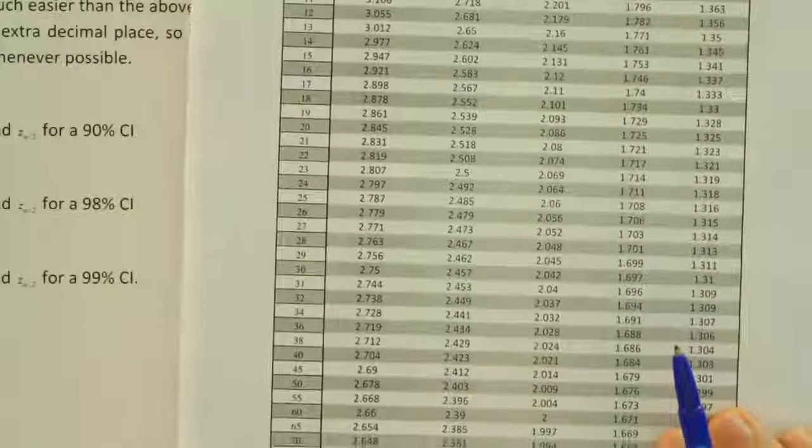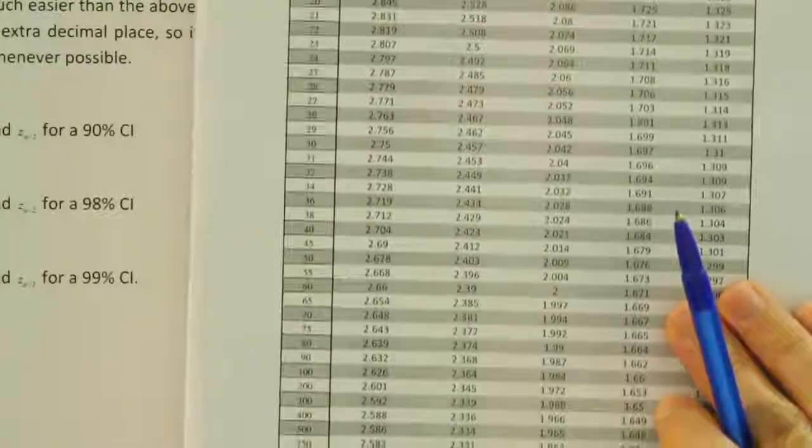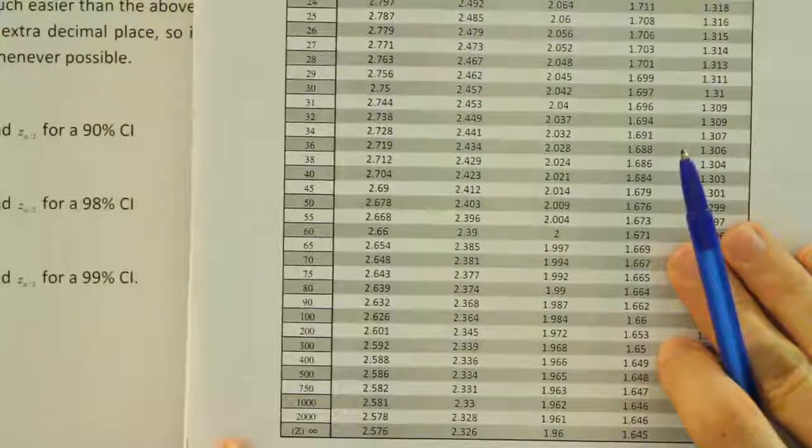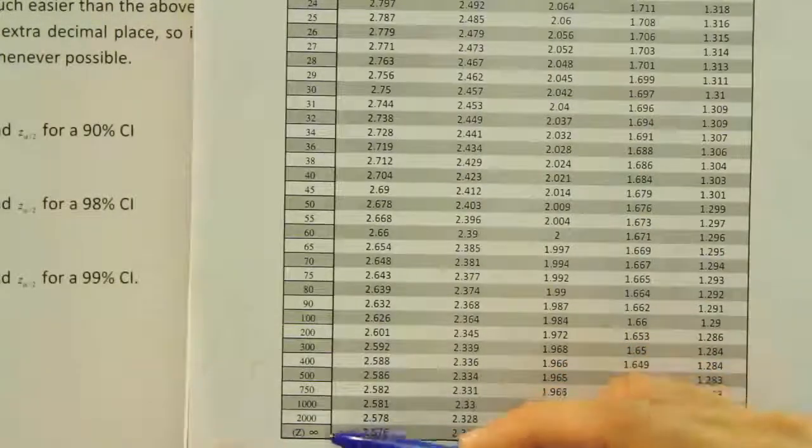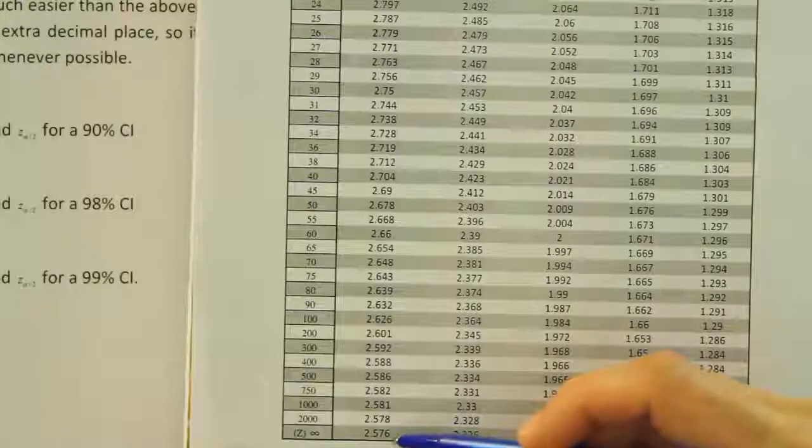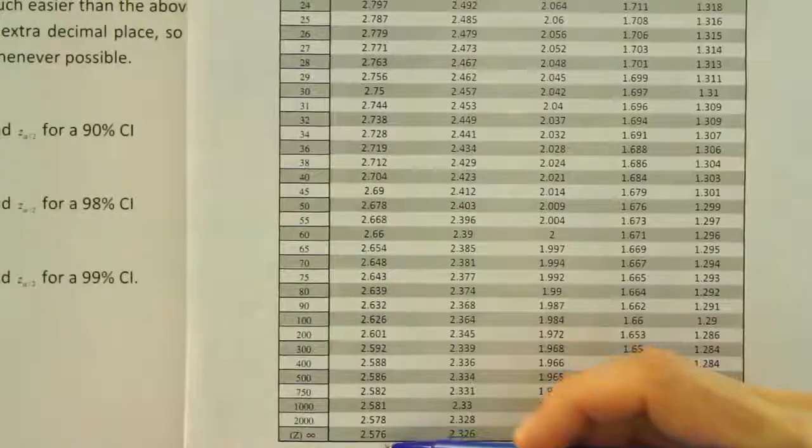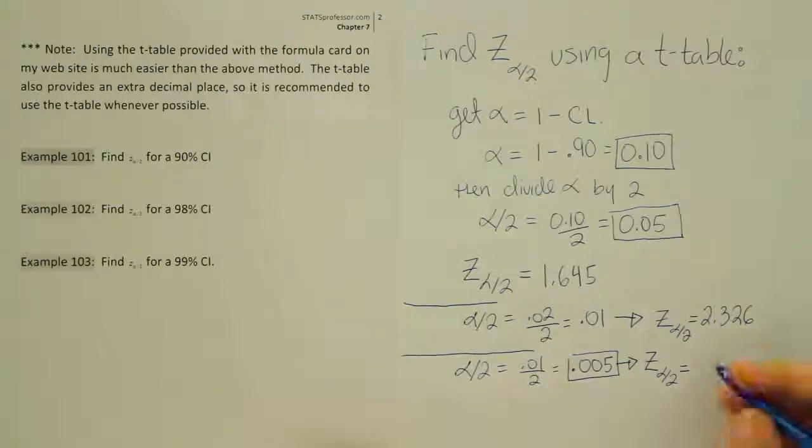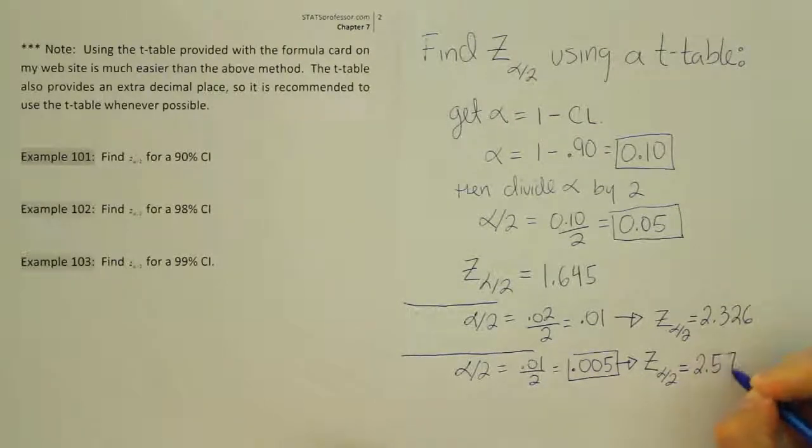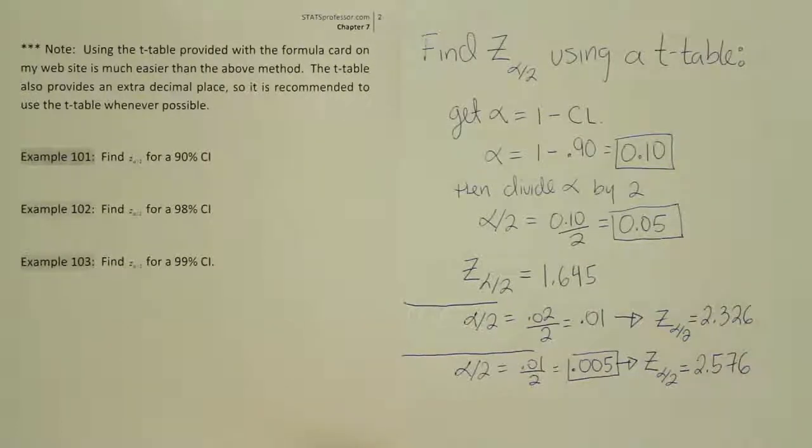So moving the table down, we end up seeing that the last column has 2.576 in it. So that's our critical z alpha divided by 2 value, 2.576. Okay, so we found our critical z alpha divided by 2 value to be 2.576. And that's it.